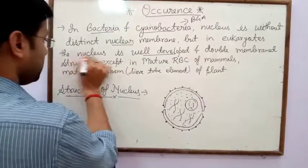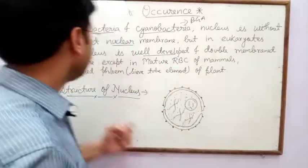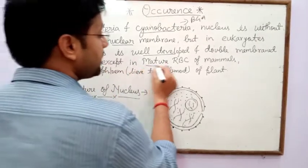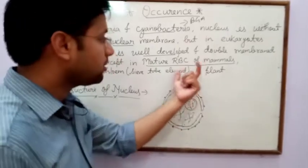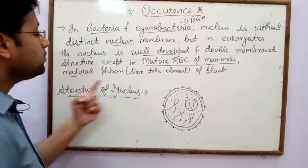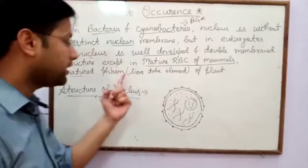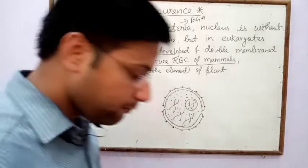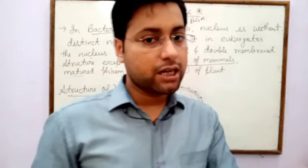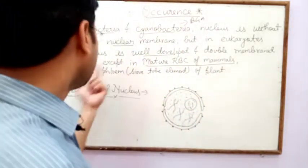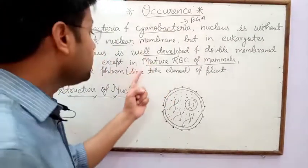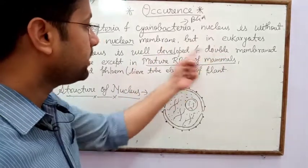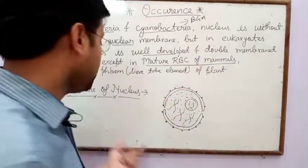The nucleus has a double membrane structure except in mature RBC of mammals and in mature phloem — especially in sieve tube elements of plants. Phloem is a type of vascular tissue or conducting tissue which helps in the conduction of food material in plants. In sieve tubes, the nucleus is absent, as well as in mature RBC of mammals.